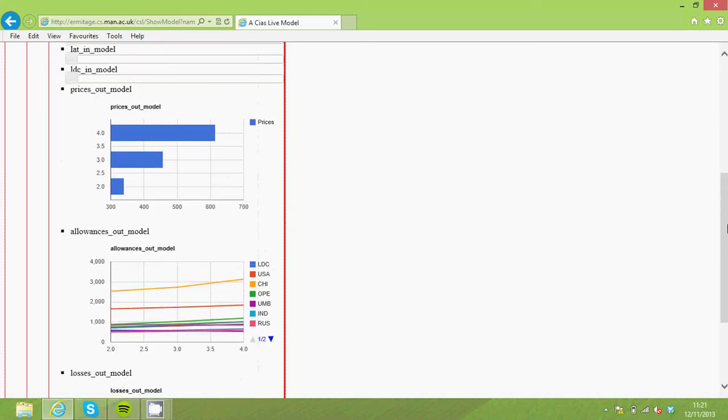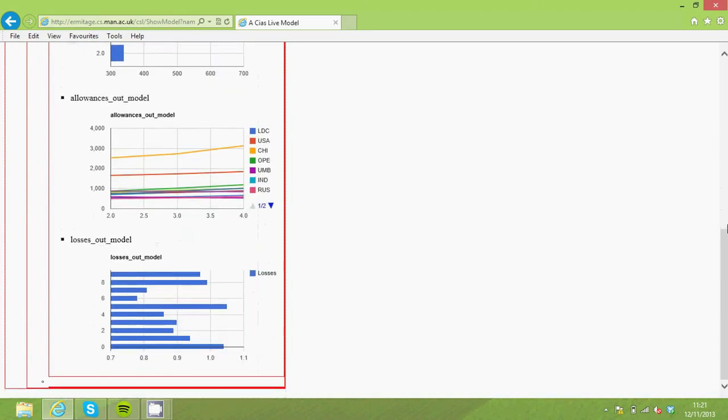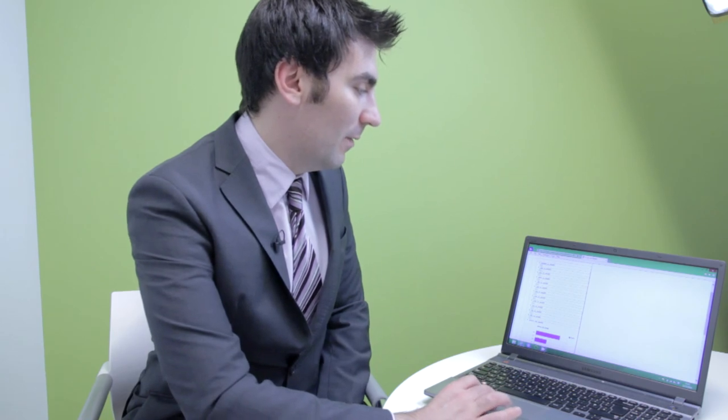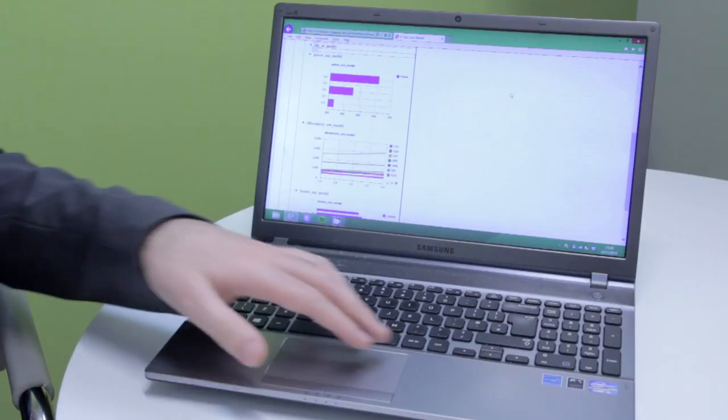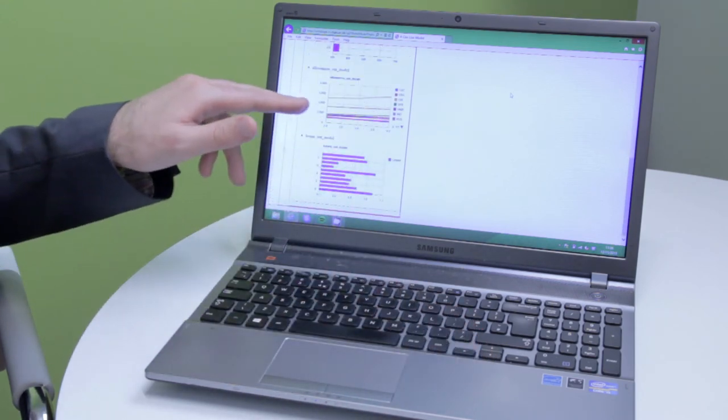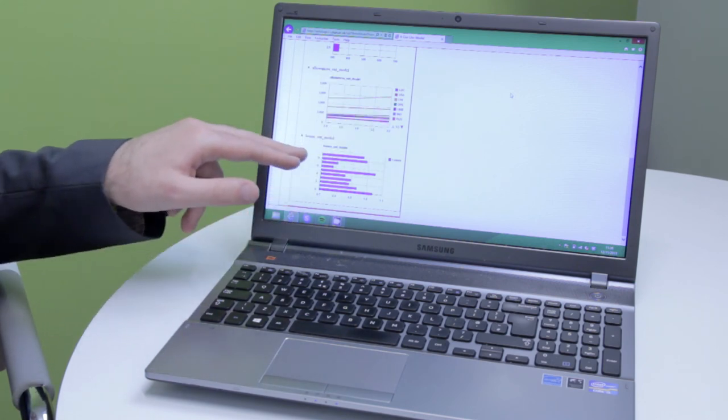So we have a graph showing how prices are affected by a particular share of burden, how allowances are affected by country and finally how losses are affected for each country as well. So as we vary the sliders here that is being fed back to the Maniclet model and the Maniclet model is producing three separate data sets all of which can be mapped onto different graphs.